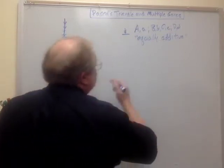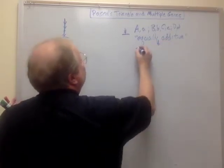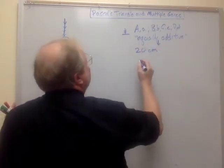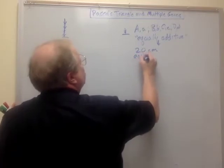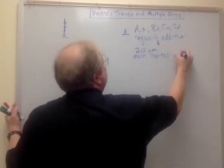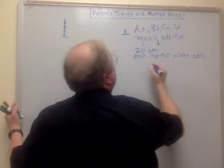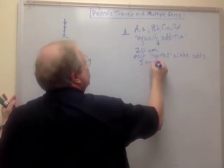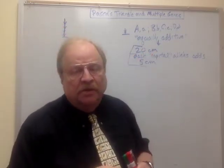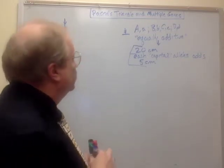Let's give a little more to this theory. Let's say that in our plant there is a base height of 20 centimeters, and every one of these capital alleles adds 5 centimeters to that base height.